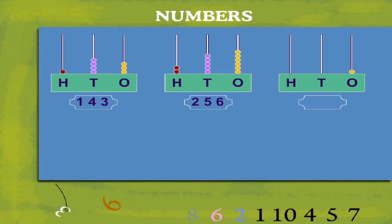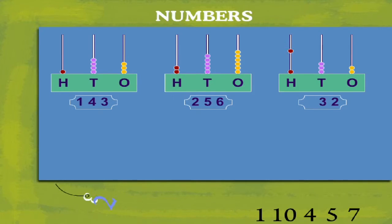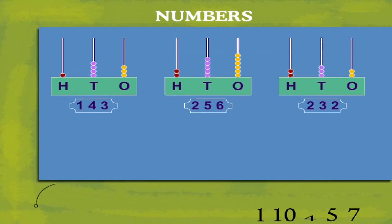The third number is two ones, three tenths and two hundredths. It is two hundred and thirty two.